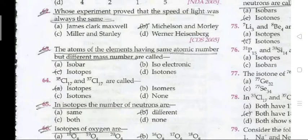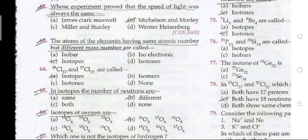Question 62: which experiment proved that the speed of light was always the same? Michelson and Morley experiment. Question 63: atoms of elements having the same atomic number but different mass numbers are called isotopes. For example, ³⁵Cl-17 and ³⁷Cl-17 are called isotopes — they have the same atomic number but different mass numbers.